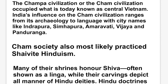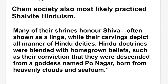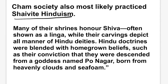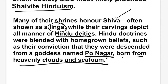The Champa civilisation occupied what is today central Vietnam. India's influence on the Cham civilisation ranges from its archaeology to language, with city names like Indrapura, Simhapura, Amaravati, Vijaya, and Panduranga. Cham society most likely practised Shaivite Hinduism — many of their shrines honour Shiva, often shown as Linga, while their carvings depict all manner of Hindu deities. Hindu doctrines were blended with homegrown beliefs, such as their conviction that they were descended from a goddess named Po Nagar, born from heavenly clouds and sea foam.